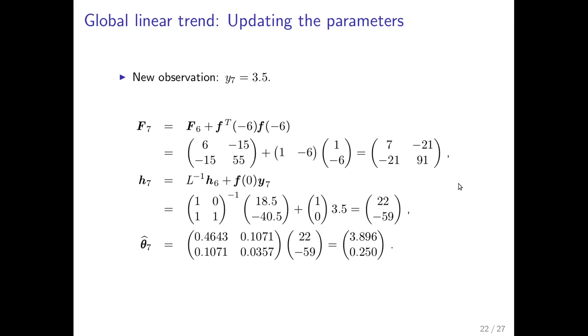What we also did last week. Was to say. Now a new observation arrives. And what we'll do. Is to update. The equations. First for the F_7. Then for the h_7. And finally for theta_7. So we'll get a slightly different lower estimate. And also a lower slope.